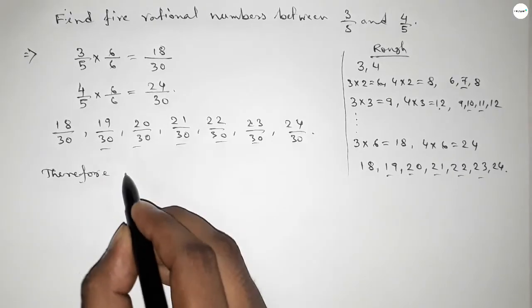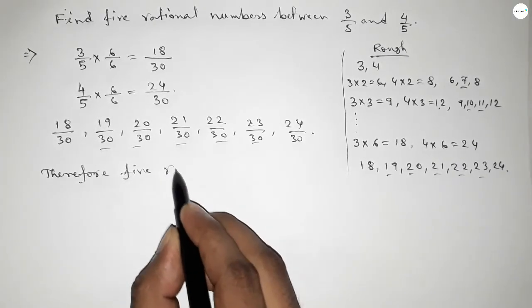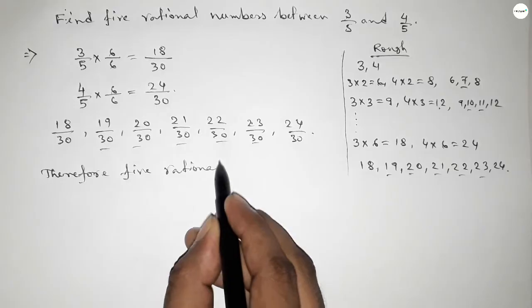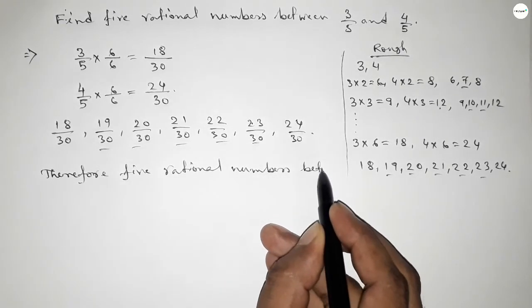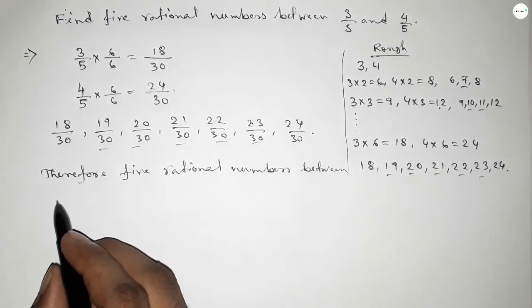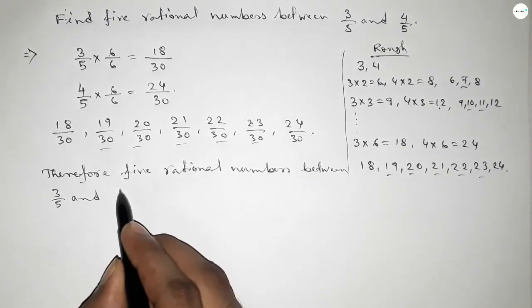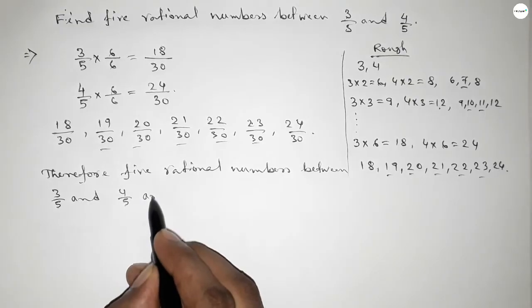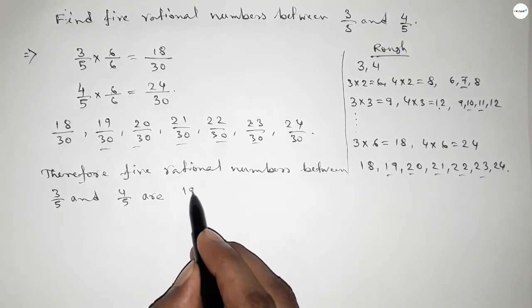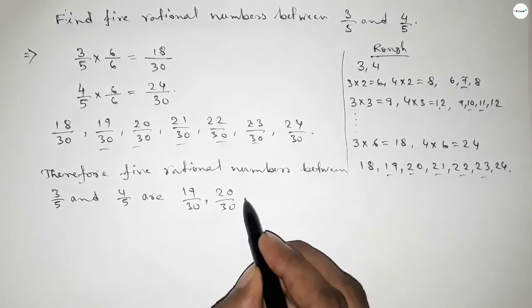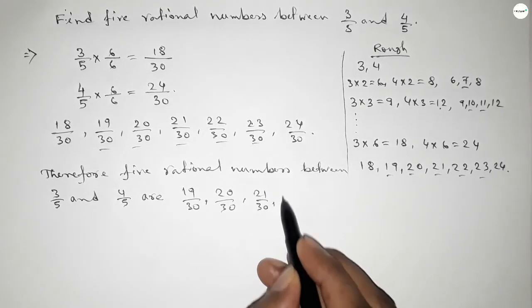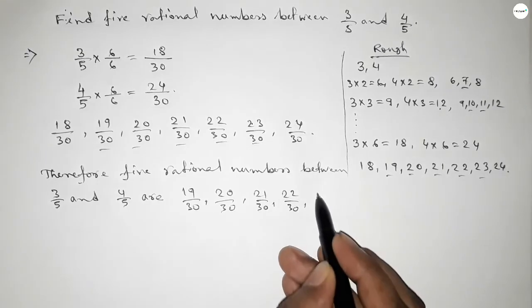Therefore, 5 rational numbers between 3 over 5 and 4 over 5 are: 19 over 30, 20 over 30, 21 over 30, 22 over 30, and 23 over 30. This is the process to find 5 rational numbers between 3 over 5 and 4 over 5.